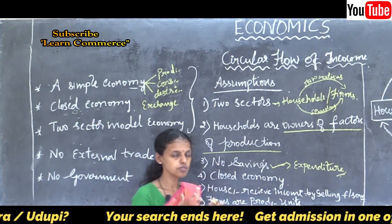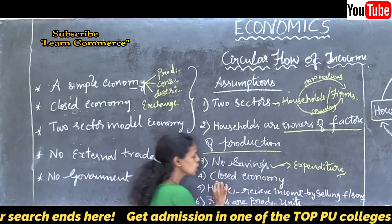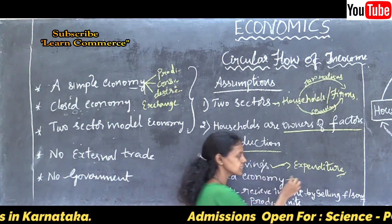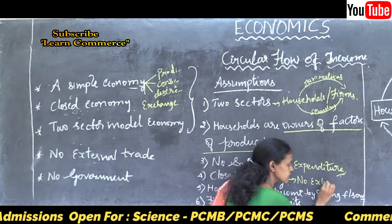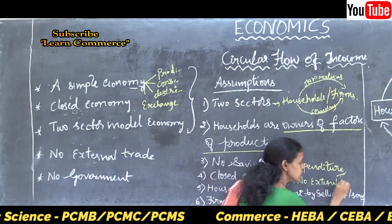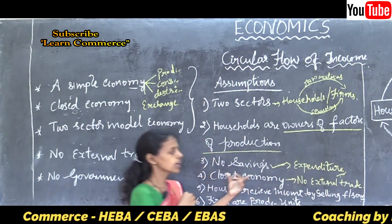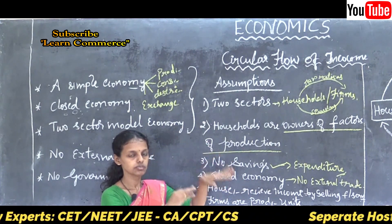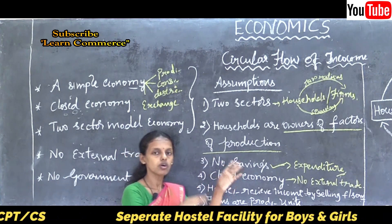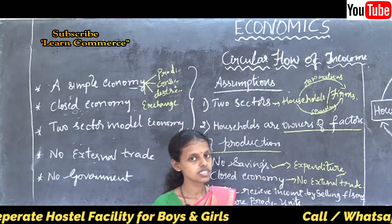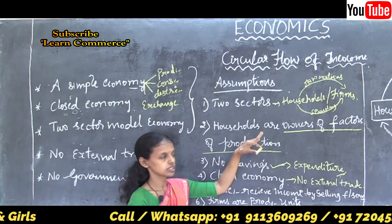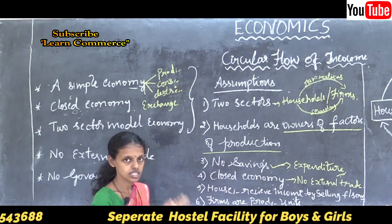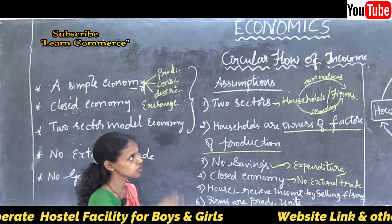The circular flow operates in a simple, closed economy — not an open economy. A closed economy means there is no external trade. Trade takes place only within the two sectors: households and firms. There are no savings, it is a closed economic system with no external trade and no government intervention — only two sectors.